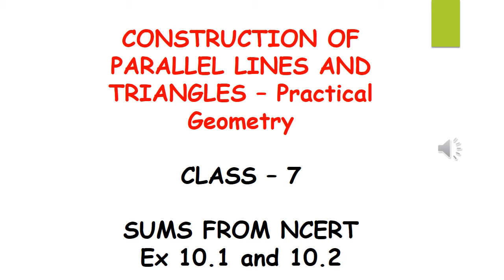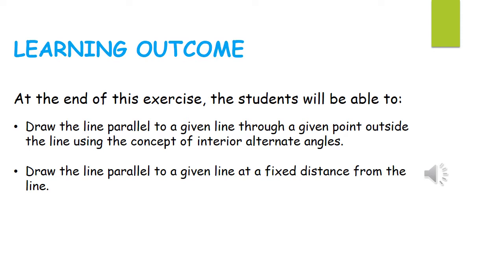Good morning children. Today we will be starting the last chapter: construction of parallel lines and construction of triangles. In our NCERT book the chapter name is Practical Geometry. We will be doing exercises 10.1 and 10.2. The learning outcome is that students will be able to draw a line parallel to a given line through a given point outside the line using interior alternate angles, and also draw a line parallel to a given line at a fixed distance. So two types of parallel line construction we will be learning here.